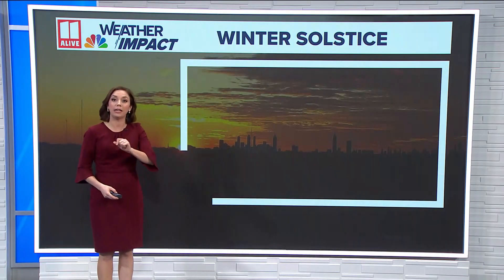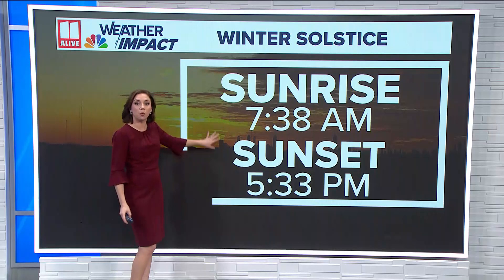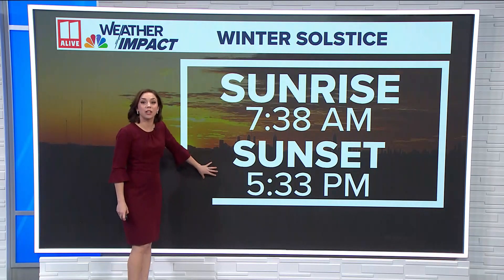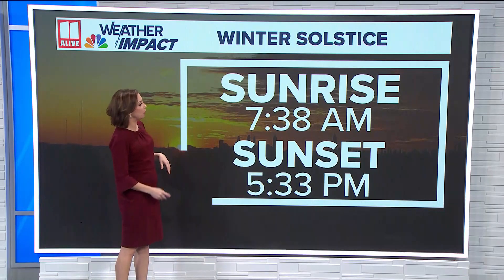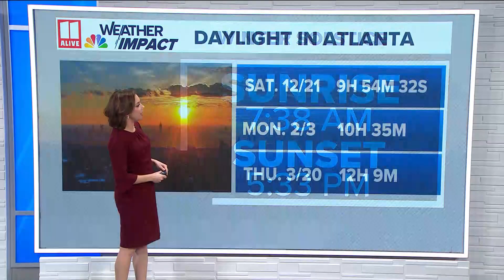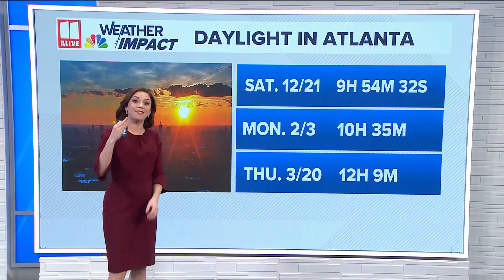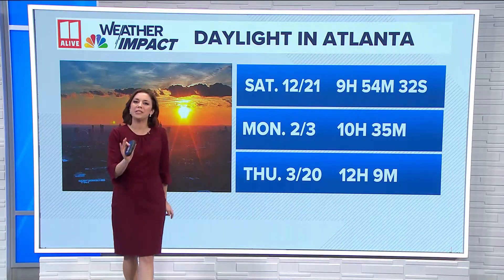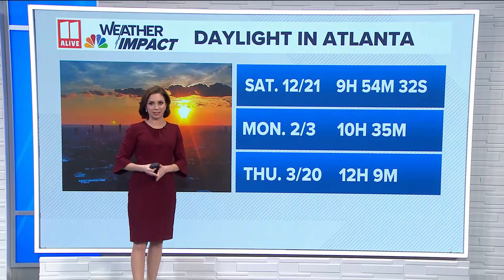Let's talk specifically about Saturday here in Atlanta. Sunrise will happen at 7:38 in the morning, sunset at 5:33 p.m. Actually, our earliest sunsets happened a little bit earlier in the month already, but it will be our shortest day of the year here in Atlanta. We're going to have 9 hours, 54 minutes and 32 seconds of daylight — that's the winter solstice.